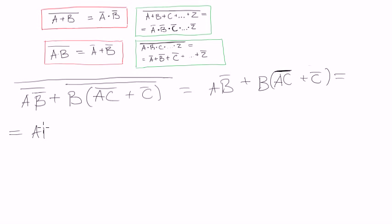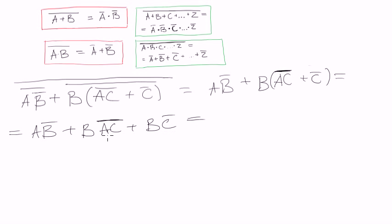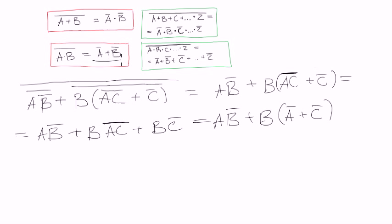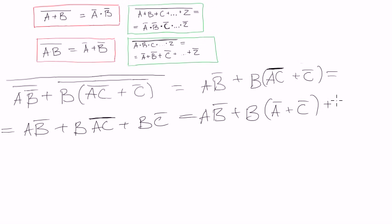Now we rewrite this one: B negated plus, and then we open the bracket, and we have B·A·C both negated with one negation, plus B·C negated. So we open the bracket. Now we have this term that we can apply De Morgan's theorem to. We write A·B negated, B, and then open the bracket and apply De Morgan's theorem. Here we have A·C, which means we will have A negated plus C negated. So we close the bracket, and we still have our B·C negated.